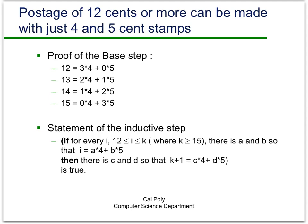Next we go on to the inductive step — here's where you need to be careful. For this problem, if for every i starting at 12 all the way up through k, where we know that k is at least 15, there exist a and b so that i = 4a + 5b, then we're going to show there exist integers c and d so that k+1 = 4c + 5d. If we can show that implication is true, then we'll be able to conclude that any amount of postage 12 cents or more can be made with just 4-cent and 5-cent stamps. Pause the video and make sure you understand this statement, because it's a bit complicated.